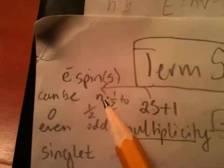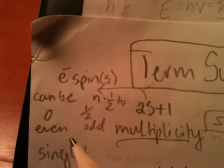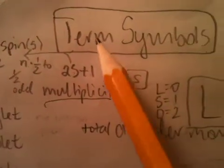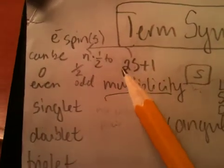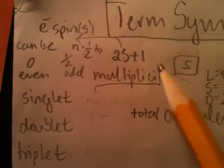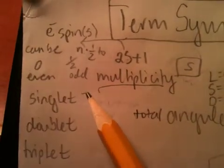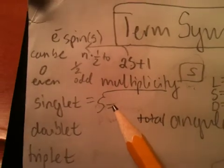So, these can go from n 1 half to 0 or 1 half. If you have an s multiplicity of 1, that means that your s here was 0, and then you get a singlet state. So, s is equal to 1.